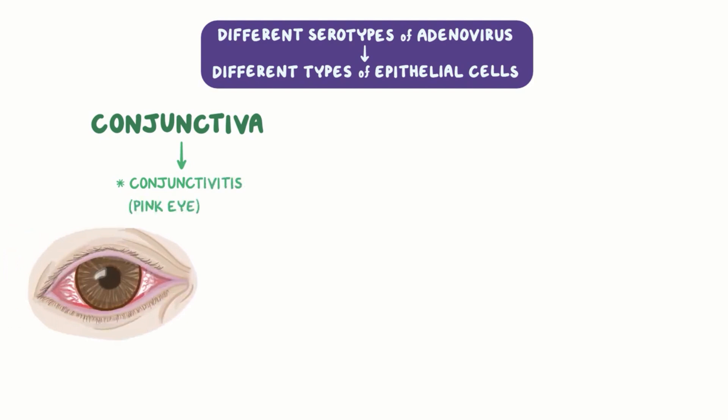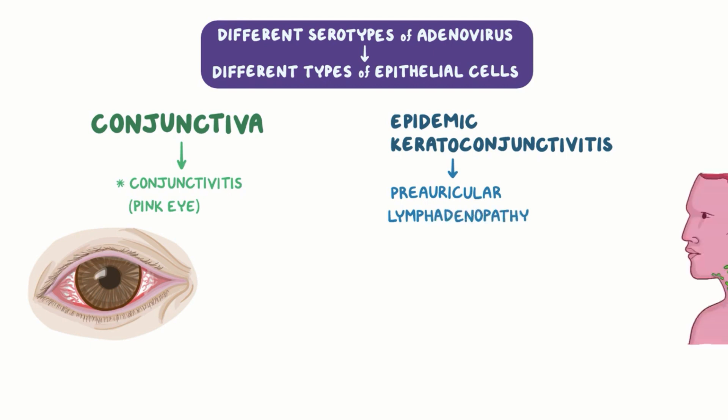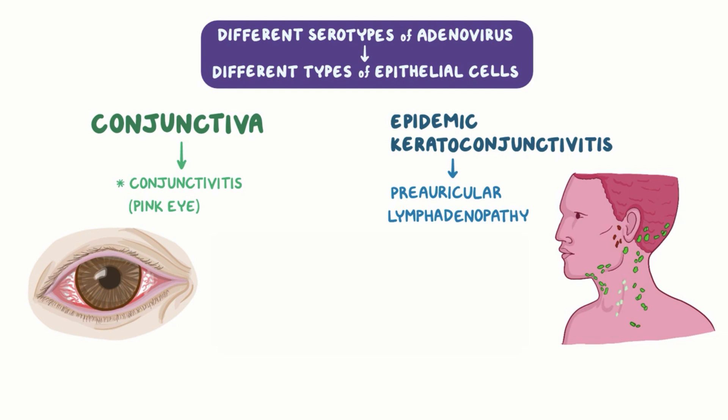A particular type of adenovirus infection, called epidemic keratoconjunctivitis, also causes preauricular lymphadenopathy, which is inflammation of the lymph nodes located right where the ear meets the cheek, because they receive the fluid that drains from the conjunctiva and the inner eyelids.